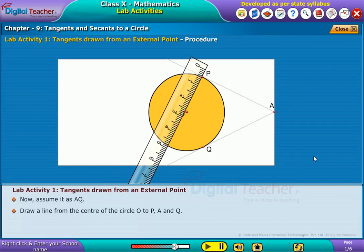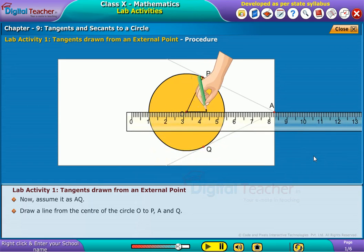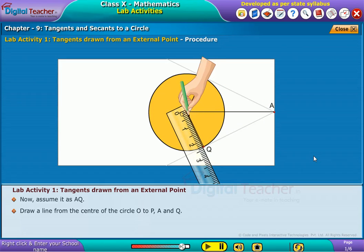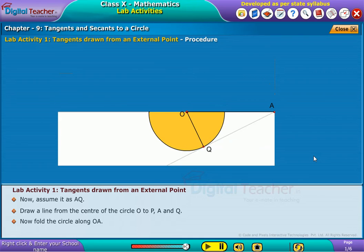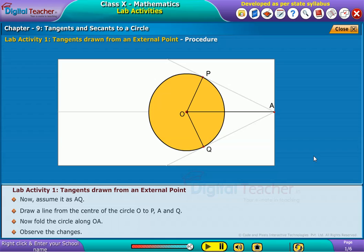Draw a line from the center of the circle O to P, A and Q. Now, fold the circle along OA. Observe the changes.